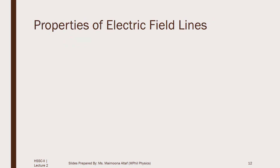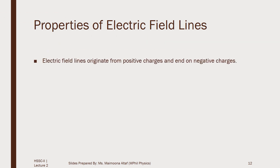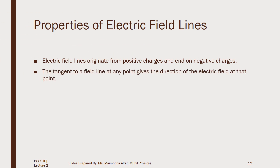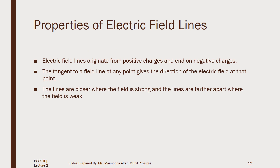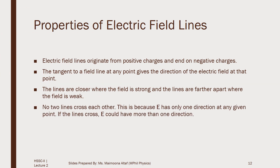Let's summarize the properties of electric field lines. Electric field lines originate from positive charges and end on negative charges. The tangent to a field line at any point gives the direction of the electric field at that point. The lines are closer where the field is strong and farther apart where the field is weak. No two lines cross each other — this is because the electric field has only one direction at any given point, and if the lines crossed, it would mean the electric field could have more than one direction, which is not possible.